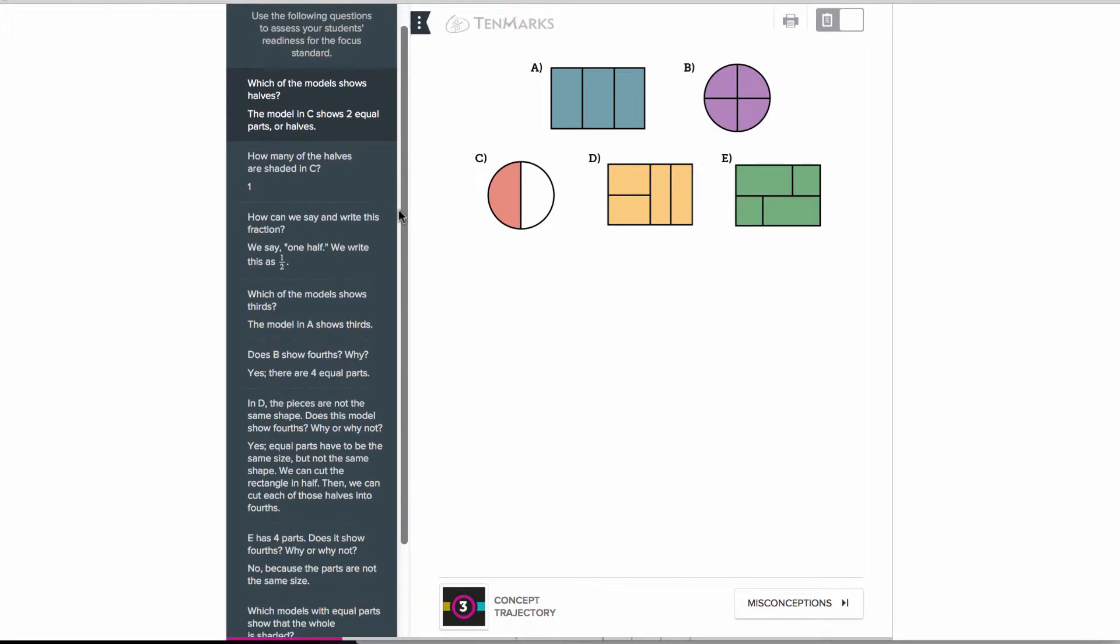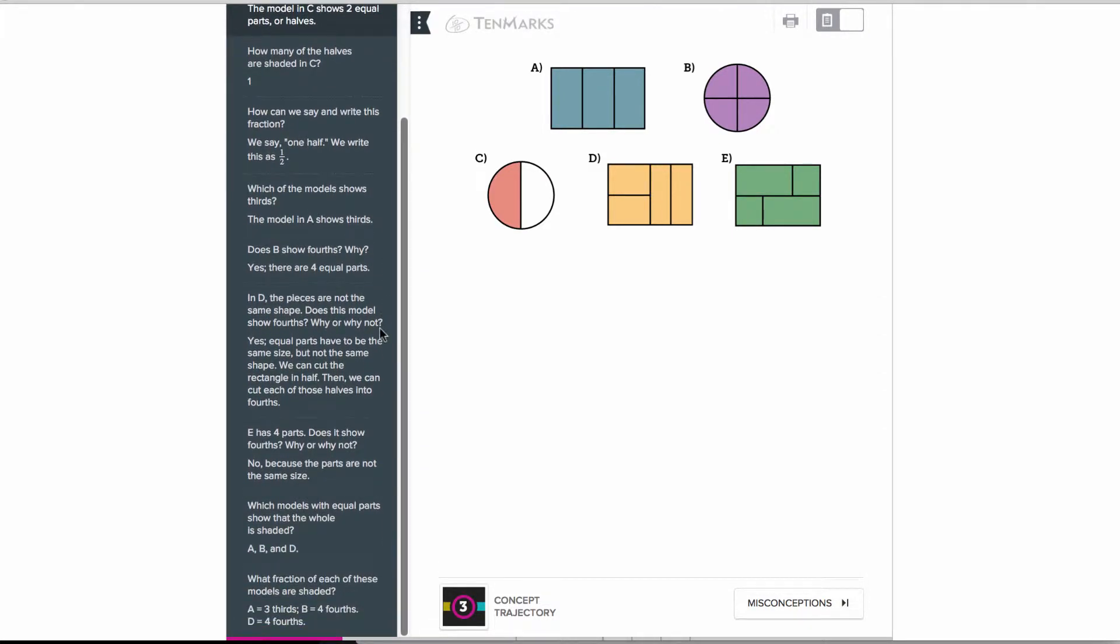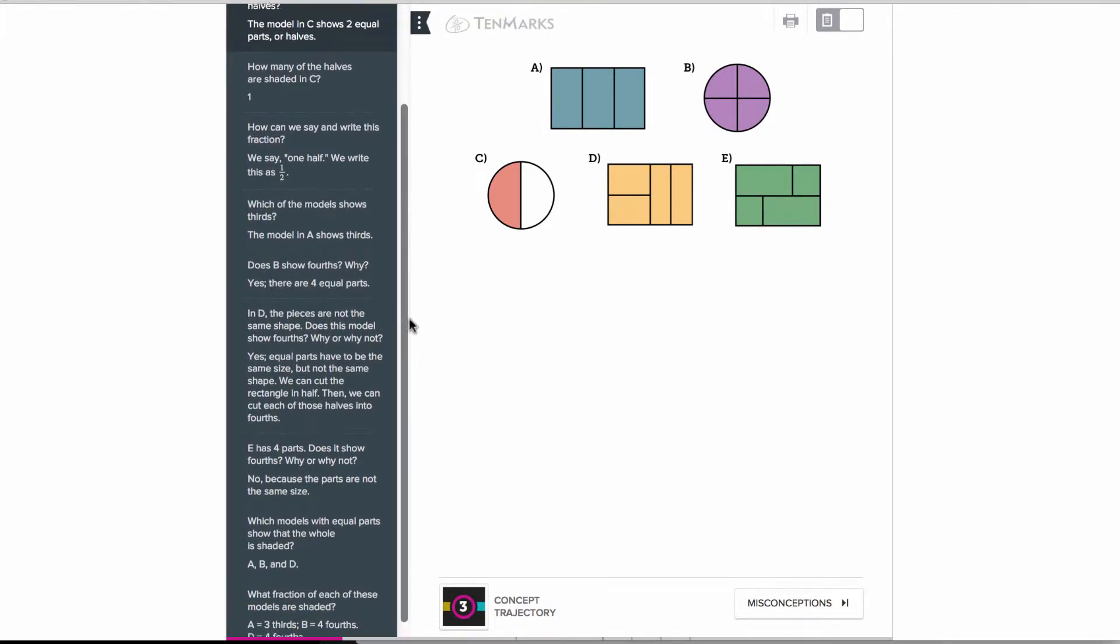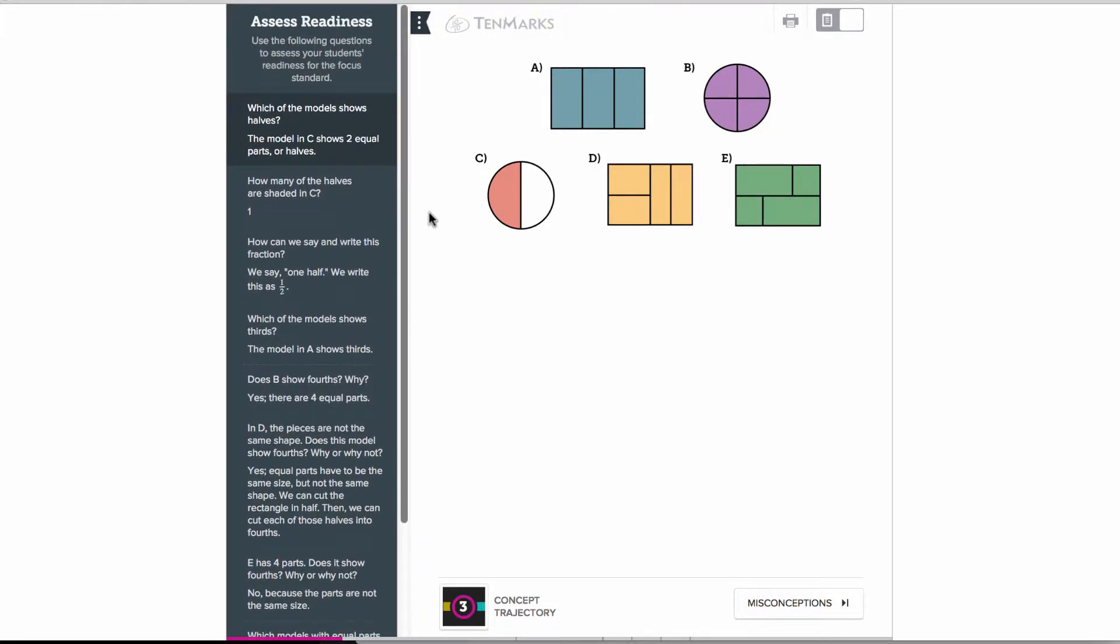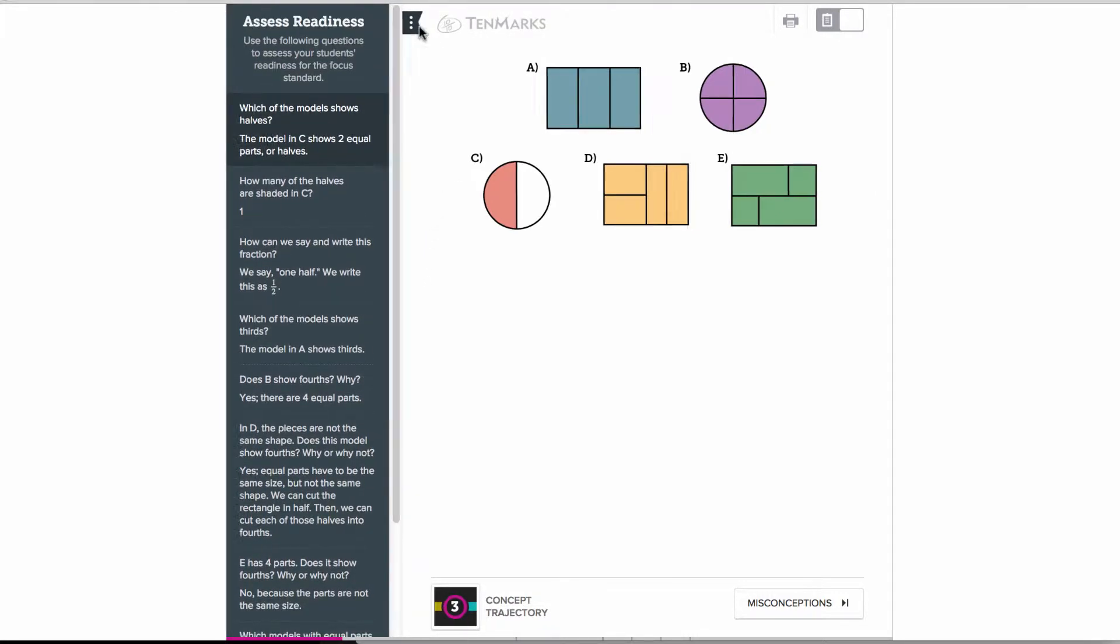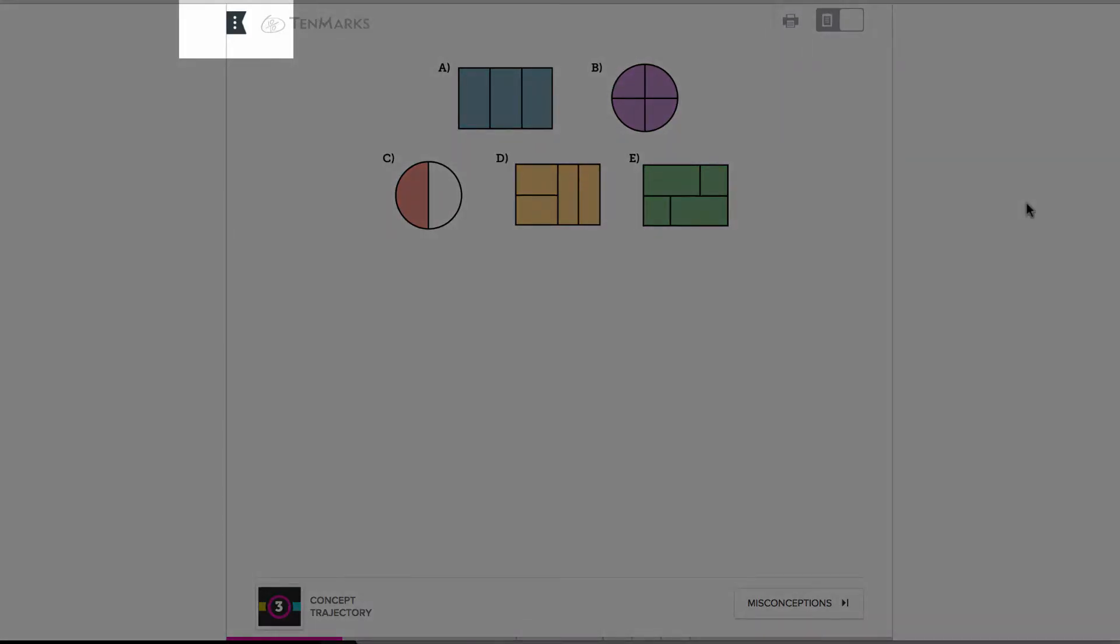The Assess Readiness questions and answers are found in the left-side panel. This panel can be collapsed or reopened by clicking on the tab.